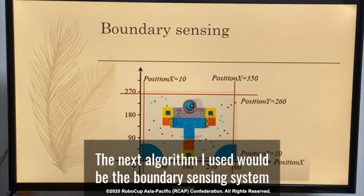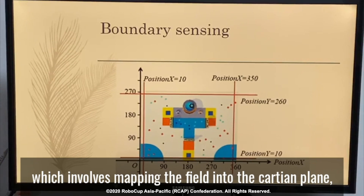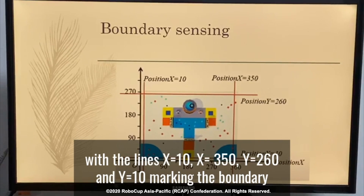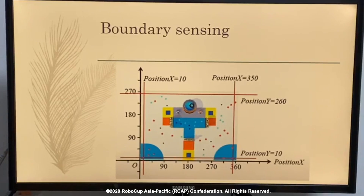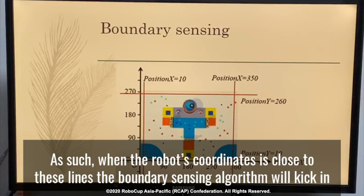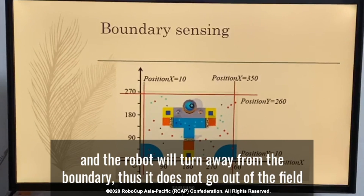Next, the second algorithm used is the Boundary 360 algorithm. The Boundary 360 algorithm involves mapping the field into a Cartesian plane in which the lines x equals 10, x equals 350, y equals 60, and y equals 10 mark the boundary. As such, when the robot's coordinates are close to these lines, the Boundary 360 algorithm will kick in and the robot will turn away from the boundary so it does not exit the field.